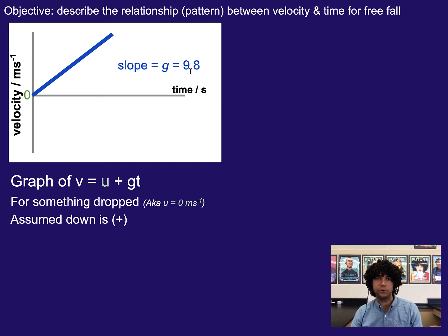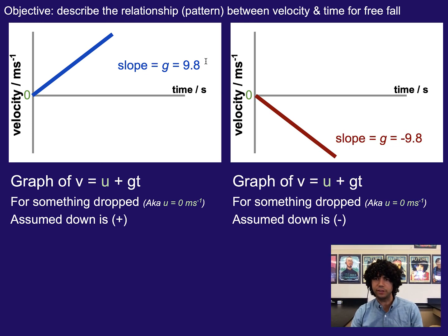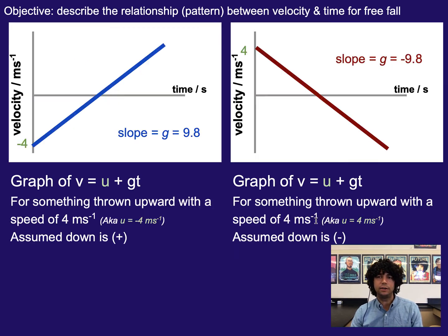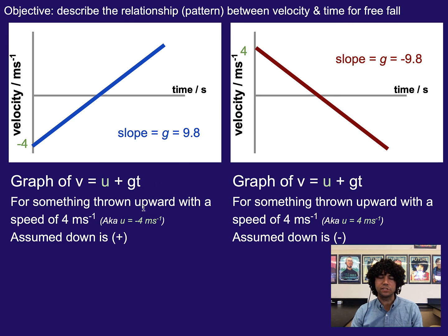If instead we thought down was negative, then we would see it go like this. Again, showing the same thing, just flipping the direction to show whether positive is up or positive is down.